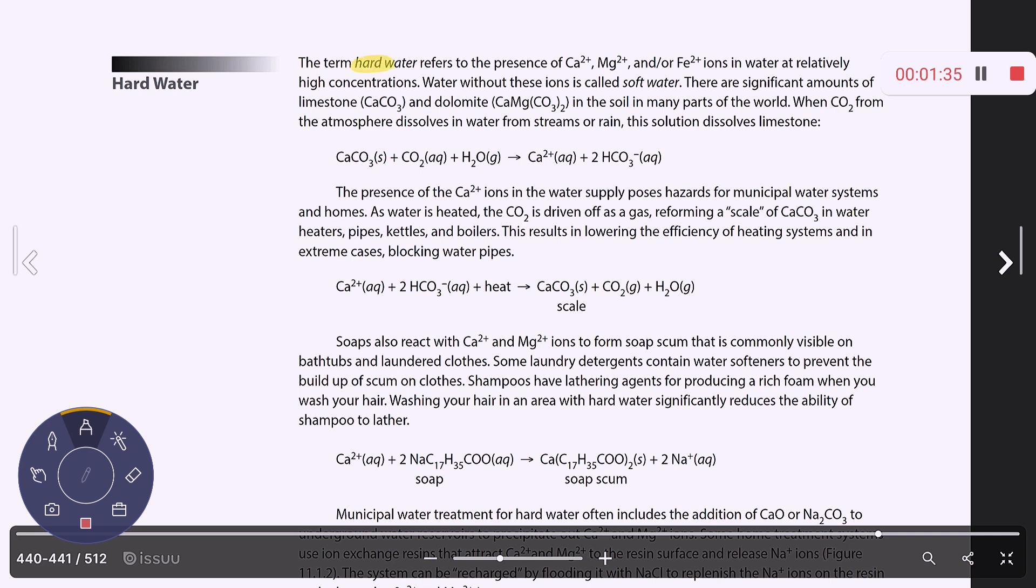So hard water is referring to having calcium, magnesium, or iron two ions in water at a pretty high concentration. If we don't have those ions present, they call it soft water.